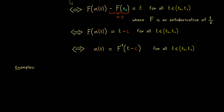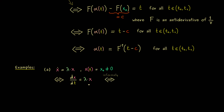Let's say we have the ODE x-dot equals lambda times x, with a positive lambda, and initial condition x₀ not equal to 0 so we can use our procedure. An informal step that helps you memorize the procedure: rewrite x-dot as dx/dt, then informally multiply by dt. The idea is to bring everything with x to the left hand side and everything with t to the right hand side, giving dx over x equals lambda times dt.